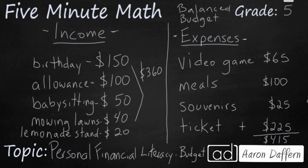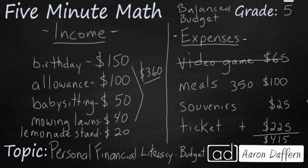So you have a few options here. When you only have a certain amount of income, you need to start looking at your expenses and separating them into needs and wants. The ticket, the souvenir, and the meals all have to do with the trip. So the video game is something that is completely unnecessary. If you were to say you're not going to get that video game, suddenly your $415 turns into $350. Now you have a budget that works, because your income is $10 greater than your expenses.